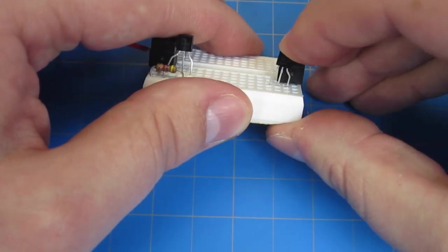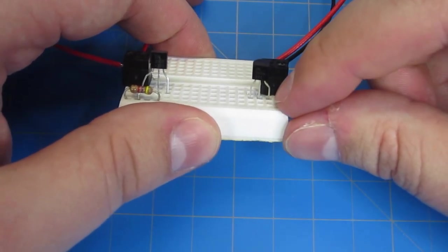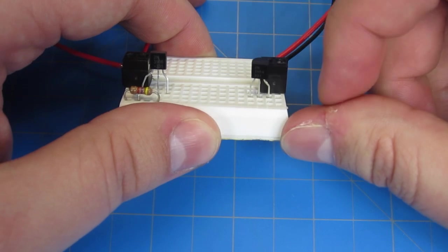Take your other transistor and put it so the far right leg is in the second row, the middle leg is in the third row, and the left leg is in the fourth row, going from right to left.